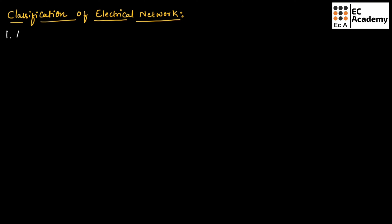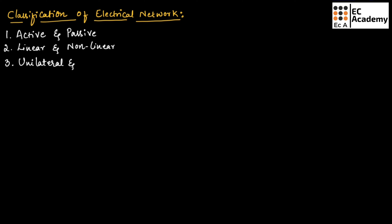Basically, an electrical network can be classified into four types. The first one is active and passive network. The second one is linear and non-linear network. The third one is unilateral and bilateral network. And the fourth type is lumped and distributed network.